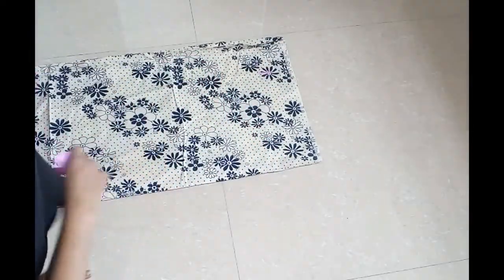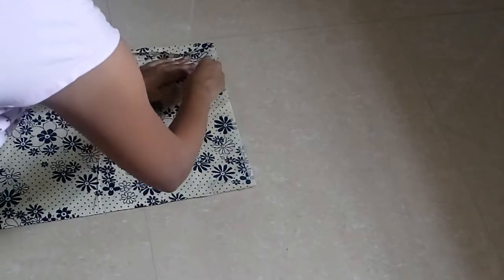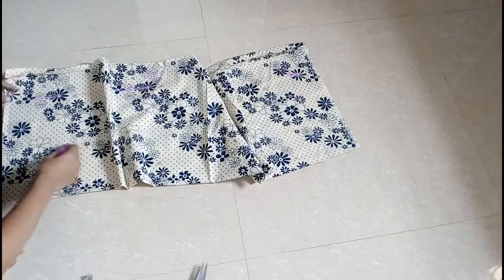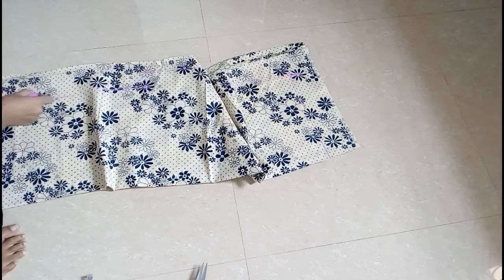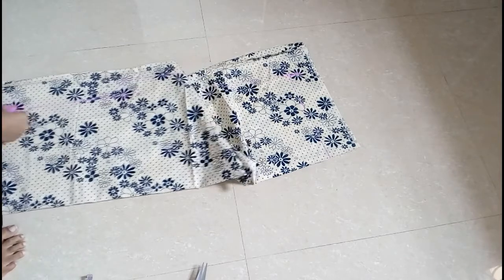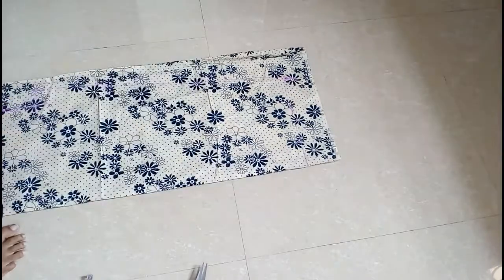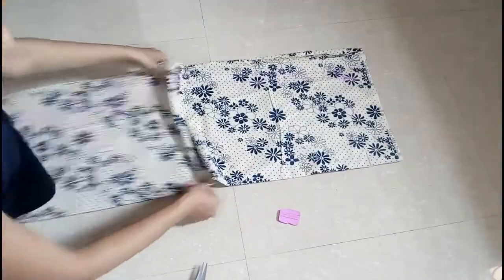Now we have to join it from here to here. We don't have to add any extra seam allowance over here because we have added it before only. You can add seam allowance over here around 1 inch. Now we have to cut it.